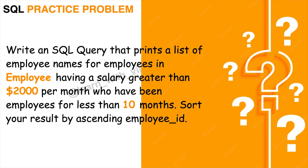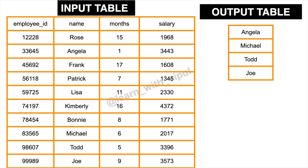Thank you for watching. I hope you liked the video — don't forget to hit the like button and subscribe for more videos and interview tips. Here's the practice problem: write an SQL query to print the names of employees from the employees table where salary is greater than $2,000 per month and tenure is less than 10 months. Sort the output by employee ID in ascending order. Please refer to the provided table and share your solution in the comments — I'll discuss it in the next video.